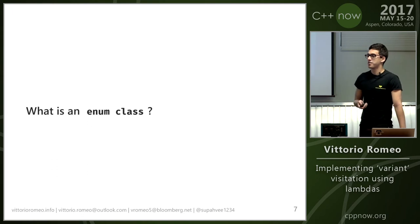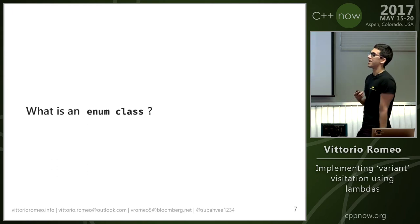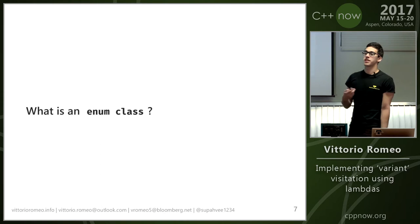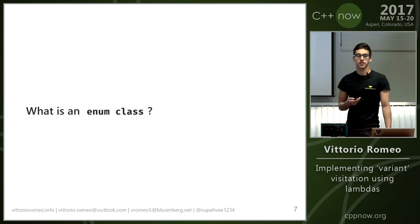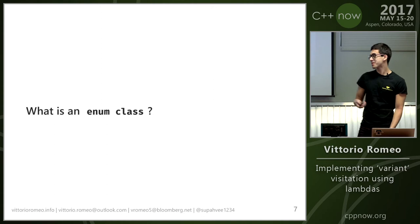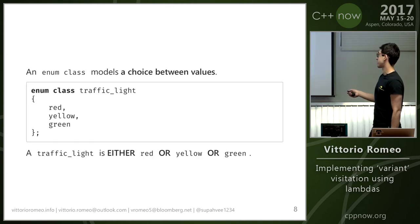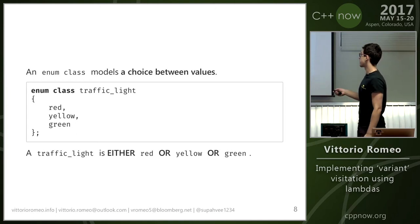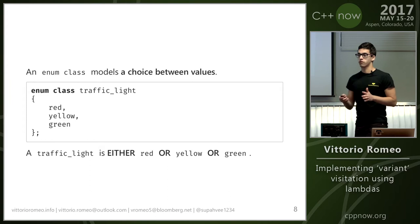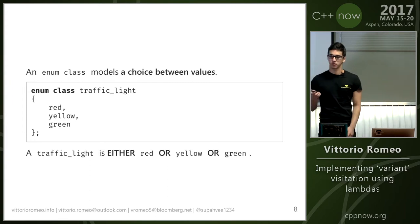An enum class is a strongly typed enum — it's a sum type. In layman's terms, it's a choice between values. You have a bunch of values: for example, to model a traffic light it can be either red, yellow, or green — only one of those at a specific point in time.